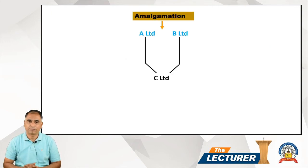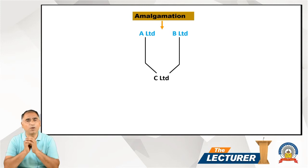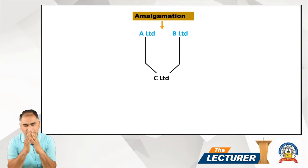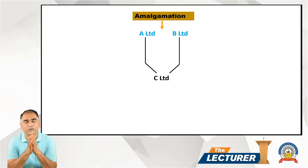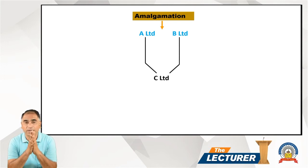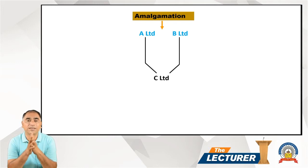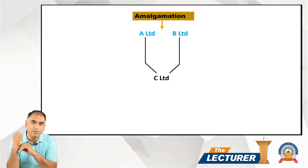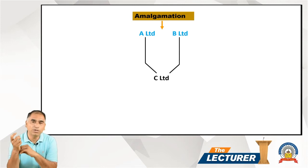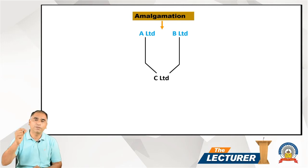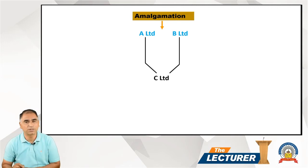What we learn in this chapter is the accounting treatment for amalgamation of companies. When we talk about accounting treatment, we always give treatment for the parties involved in the transaction. The accounting treatment covers all parties involved in the amalgamation.